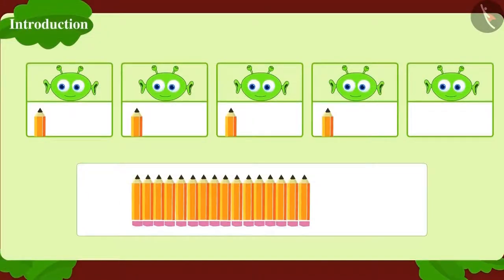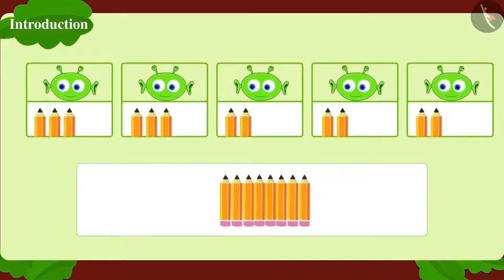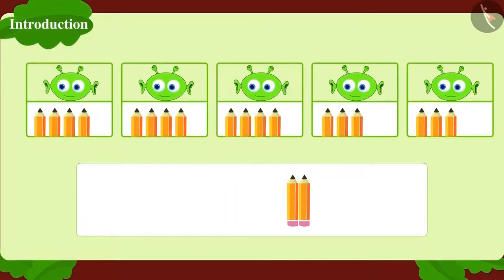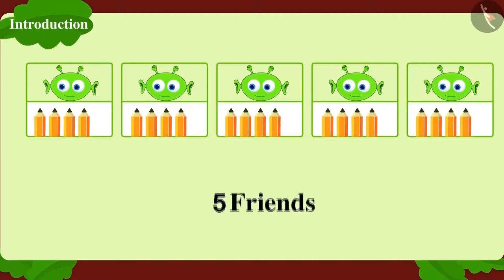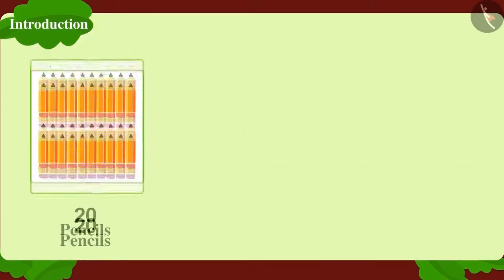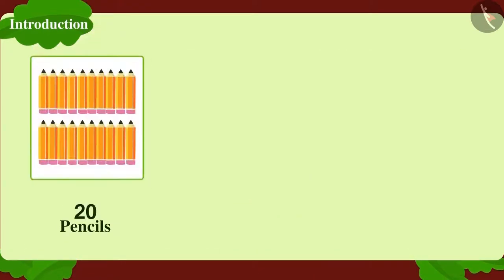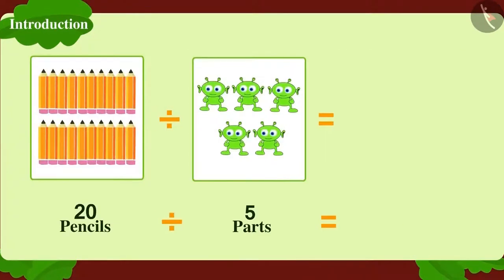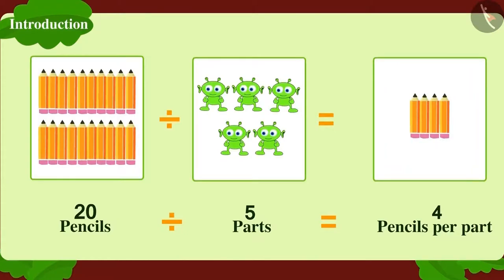Well done children! You have found the right answer. We can divide twenty pencils among five friends in this manner — each friend will get four pencils. How do we write this in the form of division? Twenty pencils divided into five parts is four pencils per part.